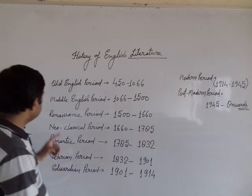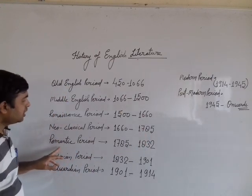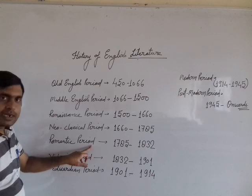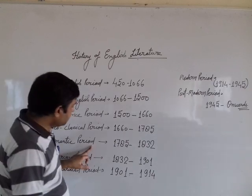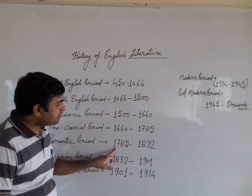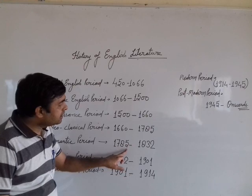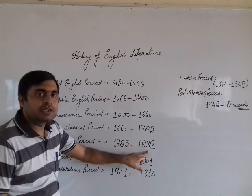After Neoclassical comes the Romantic Period. The Romantic Period is 1785 to 1832.